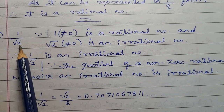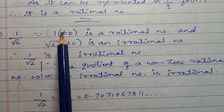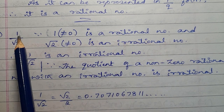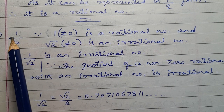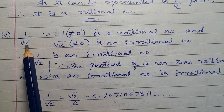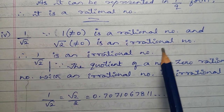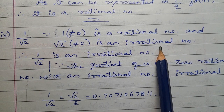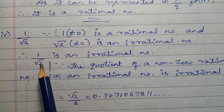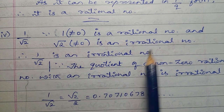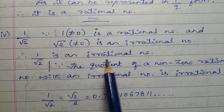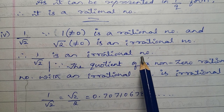Fourth one: 1 divided by square root of 2. Here 1 is not equal to 0, so it is a rational number. But square root of 2 is an irrational number. Therefore, 1 divided by square root of 2 is an irrational number.